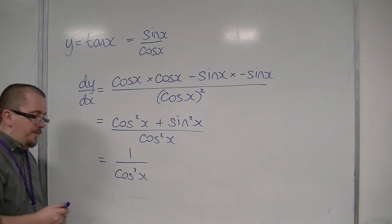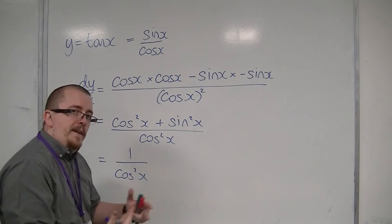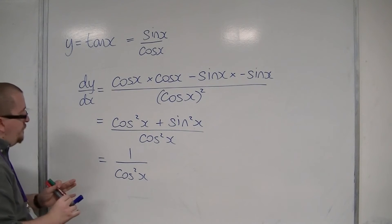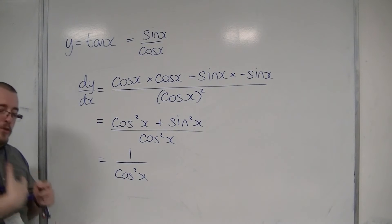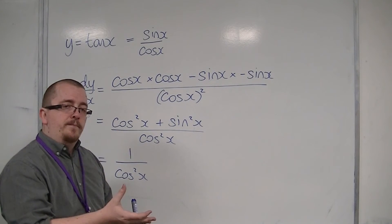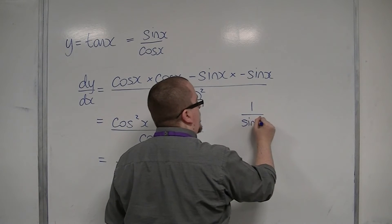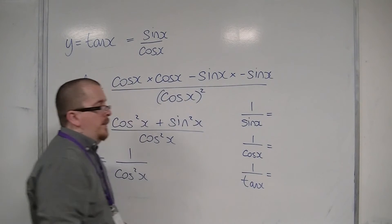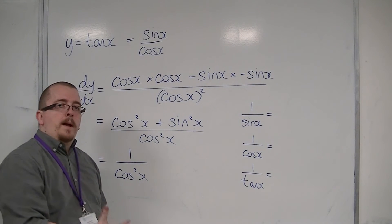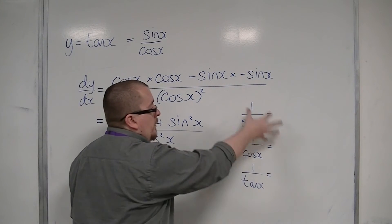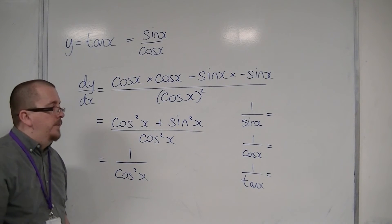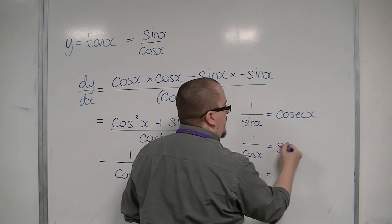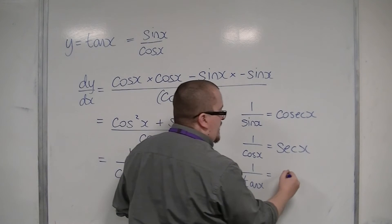At this stage we're going to go forward a little in our study, and I'm going to introduce three new trigonometric functions — the reciprocal functions of sine, cosine, and tan. So 1 over sin x, 1 over cos x, and 1 over tan x. We'll cover these in much more detail later. 1 over sin is cosec of x, 1 over cos is called sec x, and 1 over tan is known as cot x.